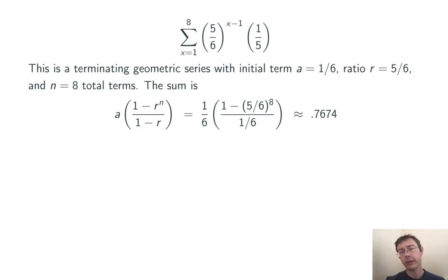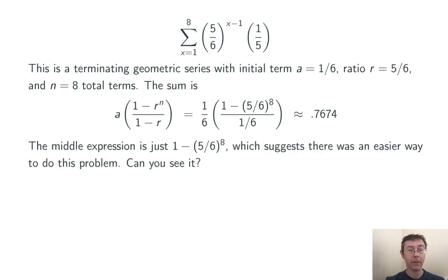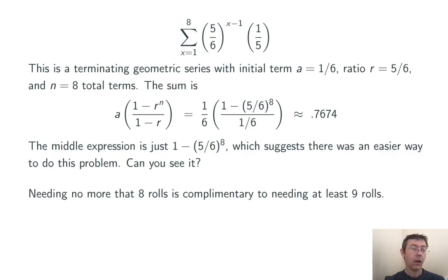Now, if you look at this for just a minute, you'll notice that that 6 in the denominator, the 1/6 out front, will cancel with the 1/6 in the denominator. So really, I'm just getting 1 minus 5/6 to the eighth here. That's very simple. And it suggests that there's an easier way to do this problem. So I'm going to suggest that you pause the video here and try and think about why the answer 1 minus 5/6 to the eighth makes sense.